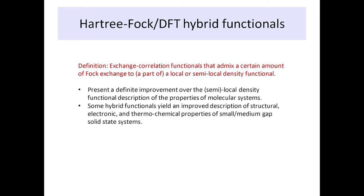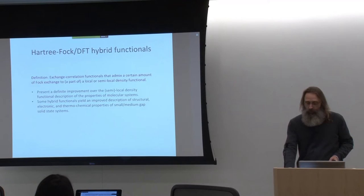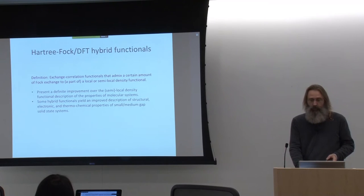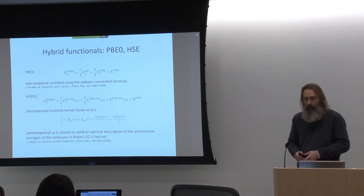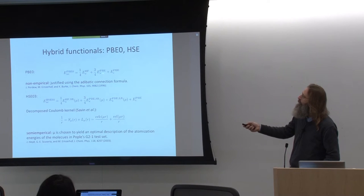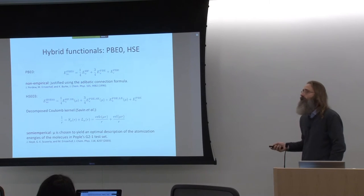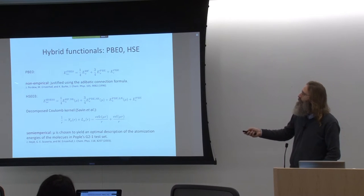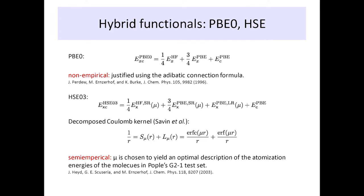By definition, these exchange-correlation functionals admix a certain amount of Fock exchange to a part of a local or semi-local density functional. The typical ones that have become very popular in solid state physics are called PBE0 and HSE. PBE0 is very simple: it's essentially a quarter of Fock exchange married to three quarters of PBE exchange, plus the correlation of PBE. It's non-empirical in the sense that this admixture of a quarter of Fock exchange is based on theoretical work — it's not simply fit to experiment.